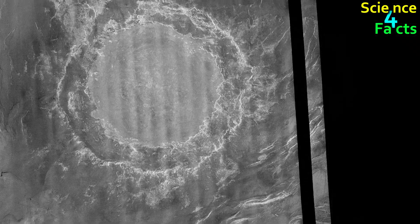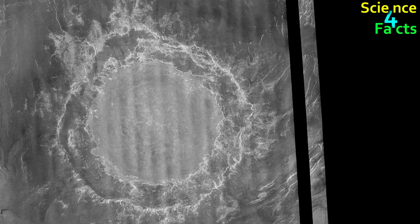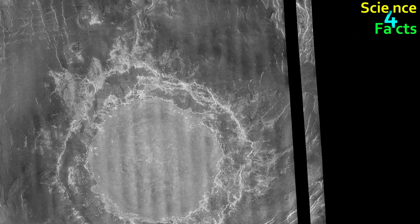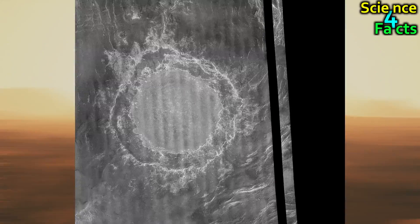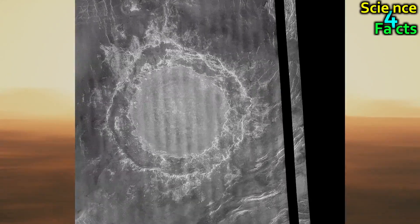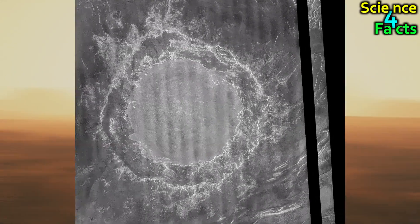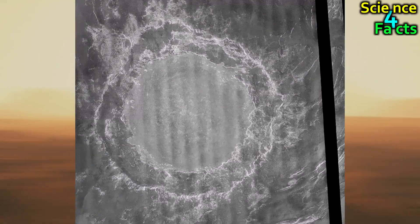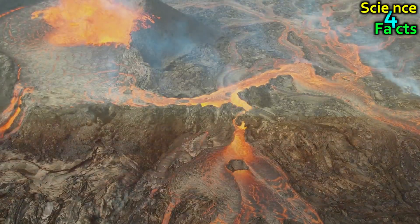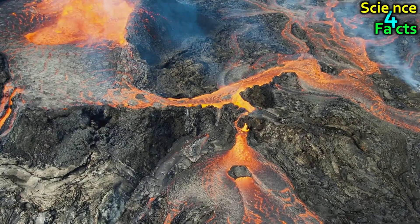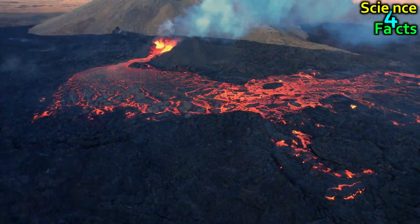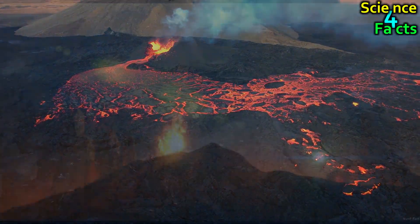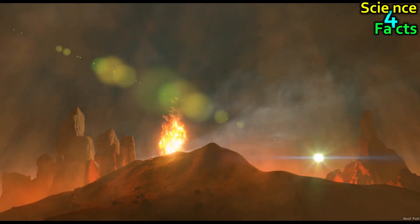The planet also has a large impact crater called Mead, which is located on the planet's southern hemisphere. This crater is approximately 280 kilometers or 174 miles in diameter and is believed to have been formed by a meteorite impact. Other notable surface features on Venus include lava flows and volcanic domes, which are thought to have been formed by volcanic activity in the planet's past.